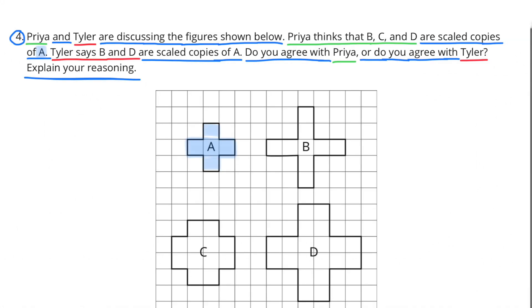Number 4. Priya and Tyler are discussing the figures shown below. Priya thinks that B, C, and D are scaled copies of A.